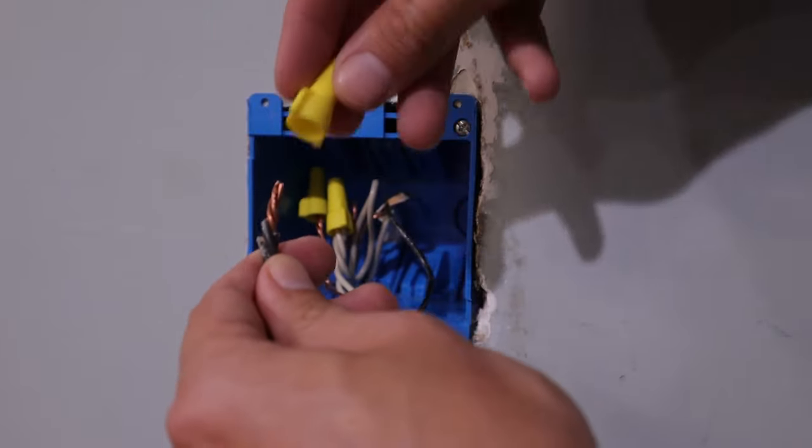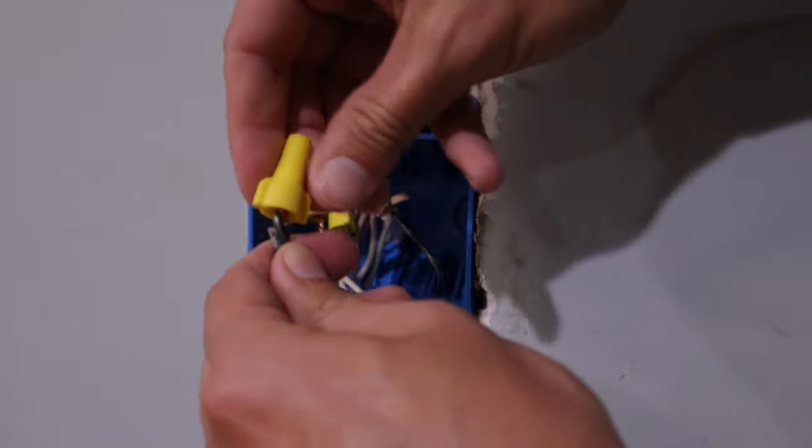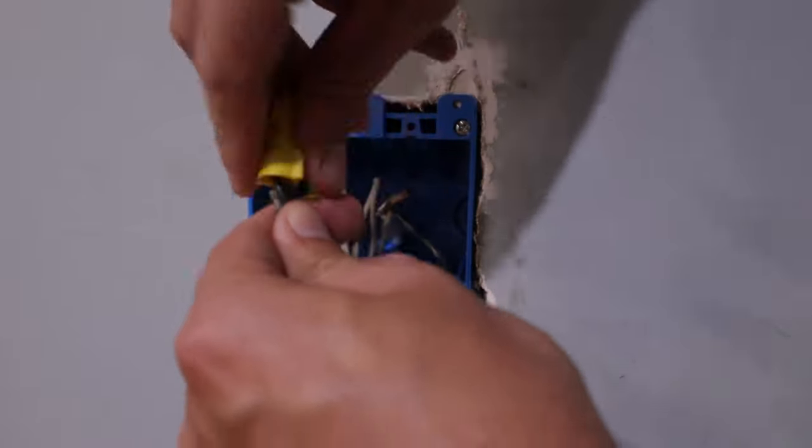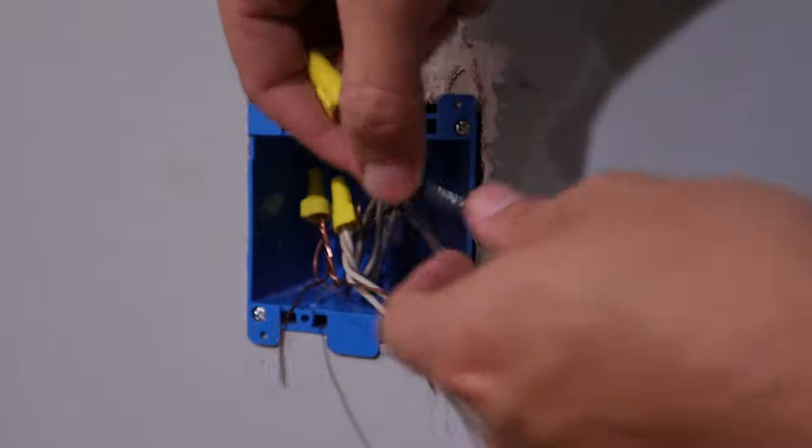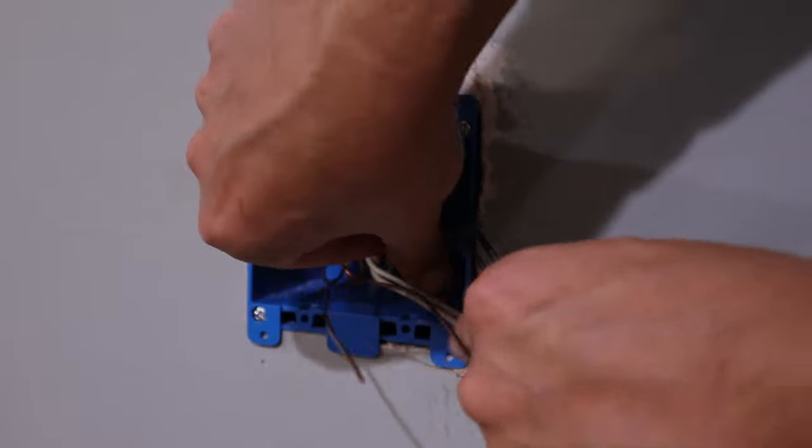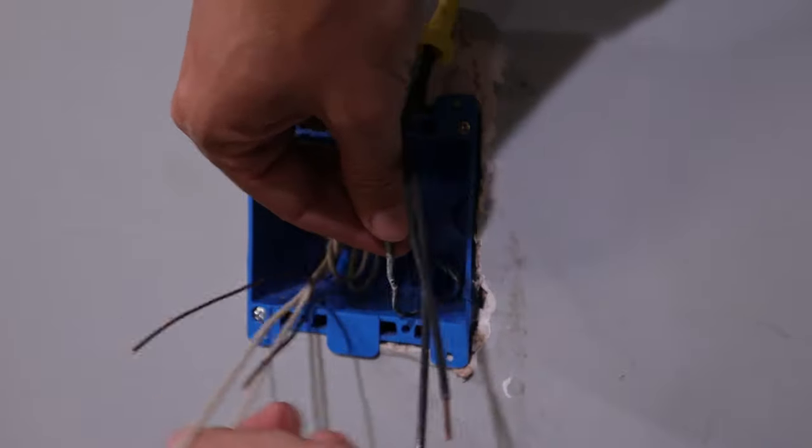Once those have started twisting together, again put a wire nut on top. And now that can go also in the back of the box with the other wires.